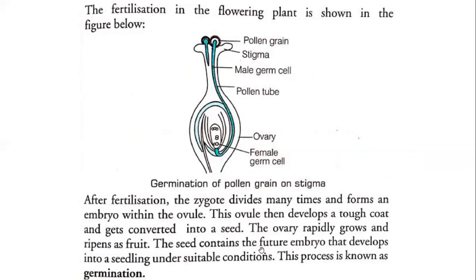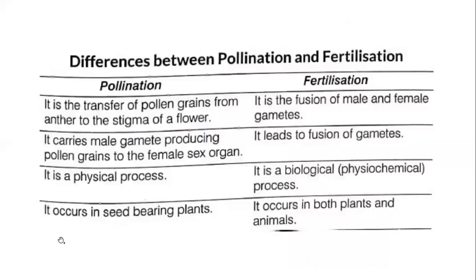The seed contains the future embryo that develops into a seedling under suitable conditions. If you place the seed under a suitable environment, it will grow into a new plant. This process is known as germination. So, the sequence is clear: first pollination, then fertilization, and then germination.